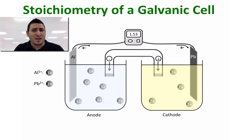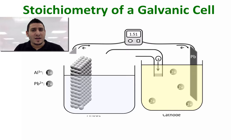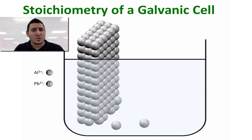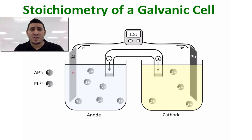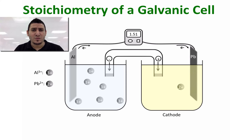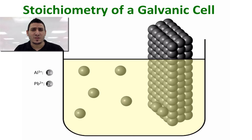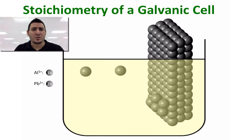Since the oxidation is happening at the anode, more aluminum ions will be generated in the solution and the aluminum electrode will decrease in mass since more particles are leaving the electrode. Since the reduction is happening at the cathode, the number of particles in solution will decrease since more particles are getting deposited on the cathode, and therefore the mass of the cathode will increase.